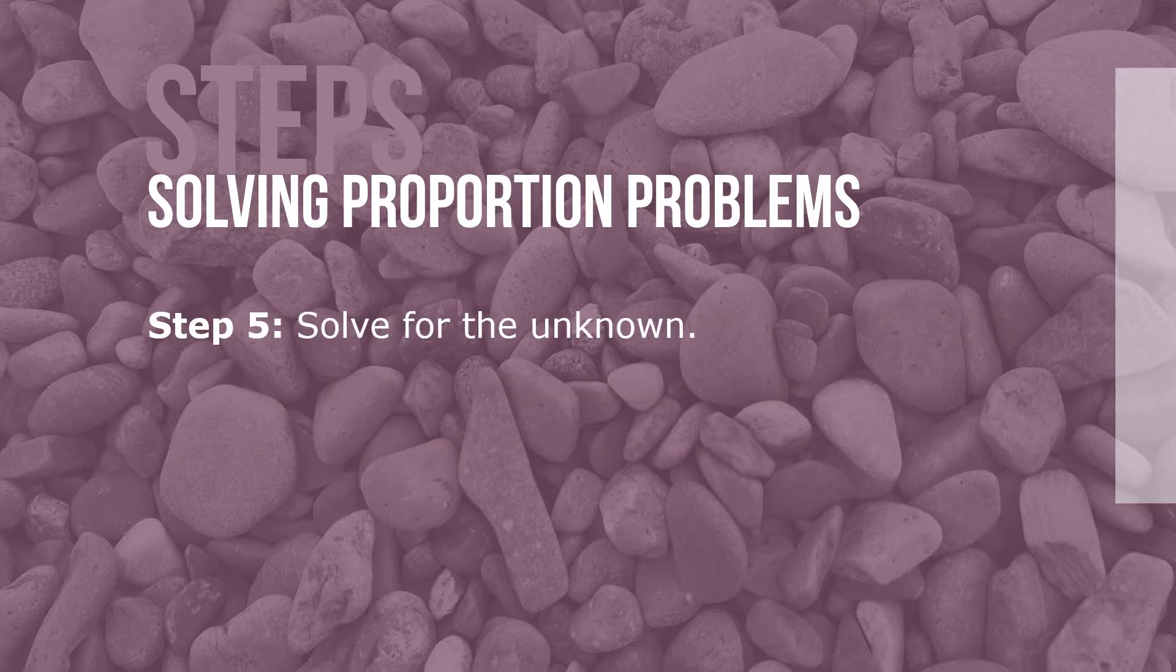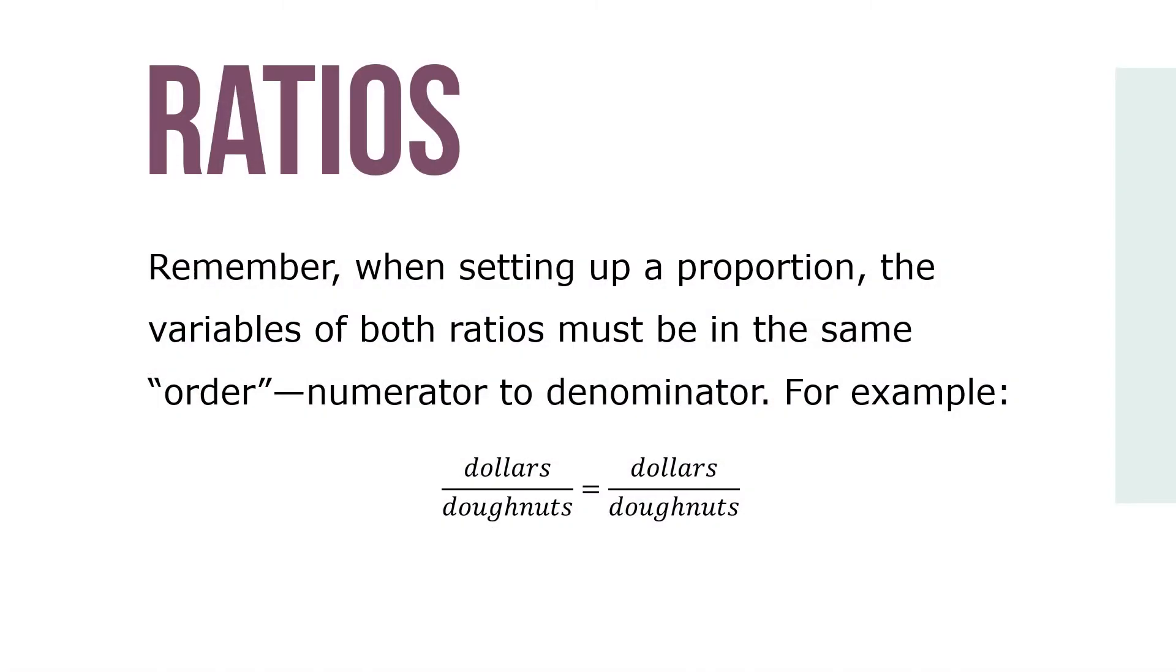Step 5: Solve for the unknown. Remember, when setting up a proportion, the variables on both sides must be in the same order, numerator to denominator. For example, dollars over doughnuts equals dollars over doughnuts.